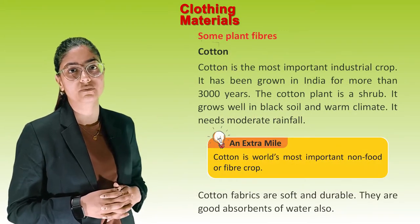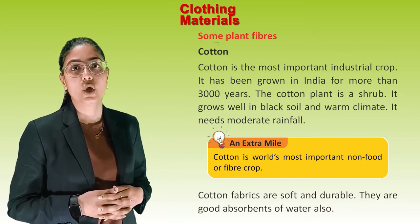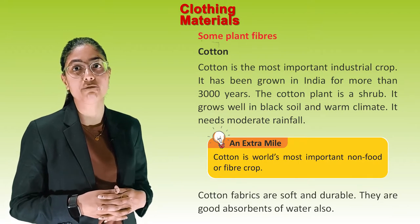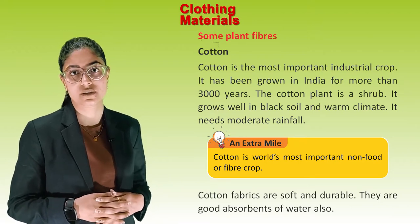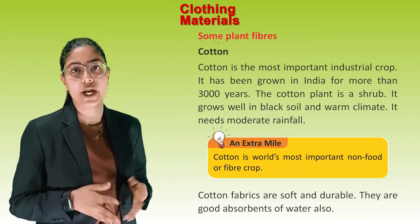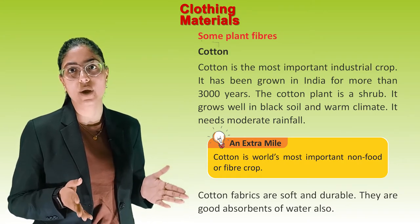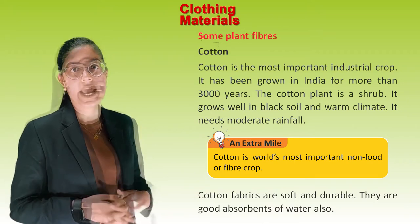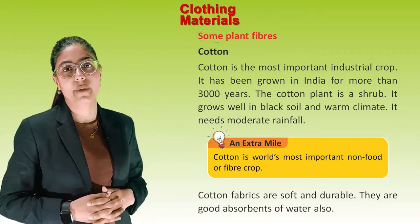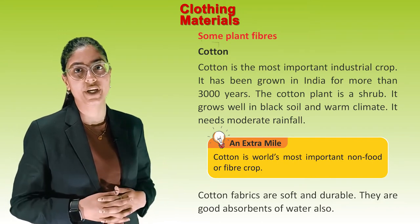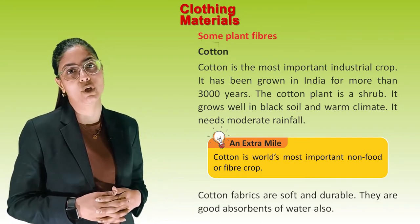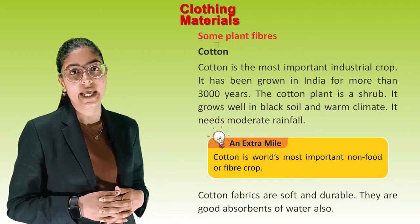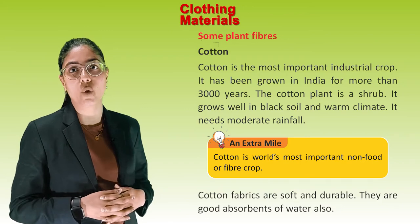Plant Fibres — Cotton: Cotton is the most important industrial crop and has been grown in India for more than 3000 years. The cotton plant is a shrub that grows well in black soil and a warm climate with moderate rainfall. Cotton is the world's most important non-food or fibre crop. Cotton fabrics are soft, durable, and a good absorbent of water.